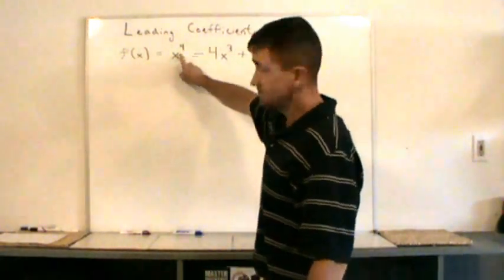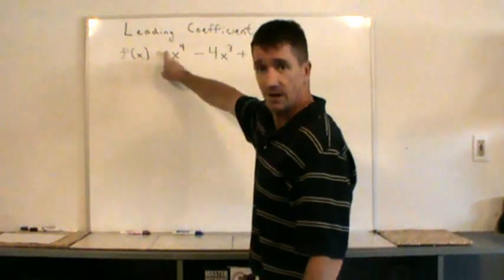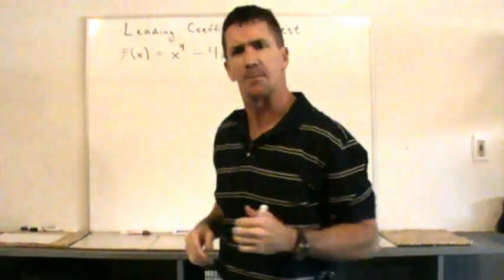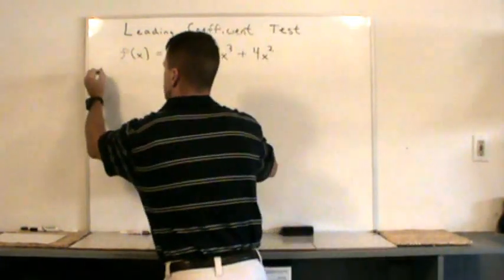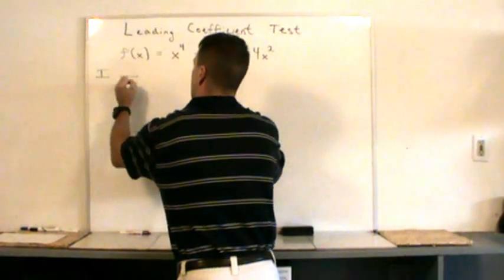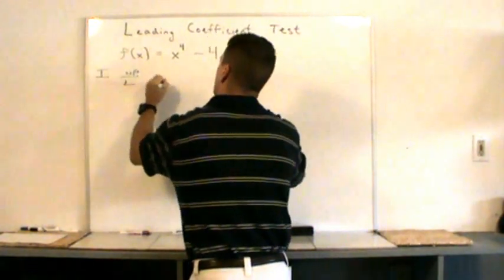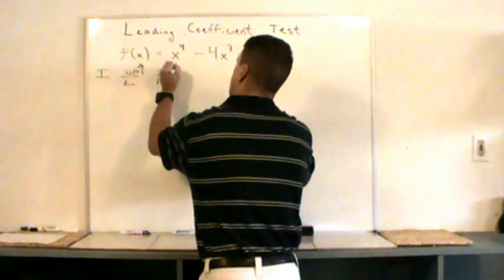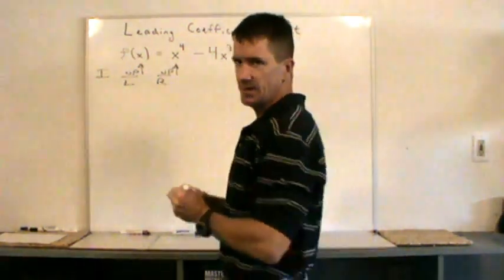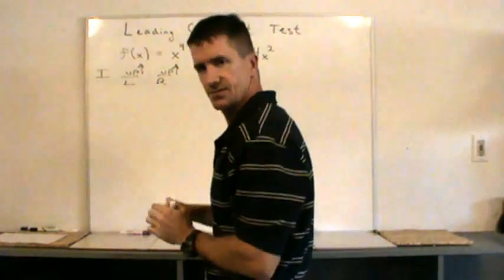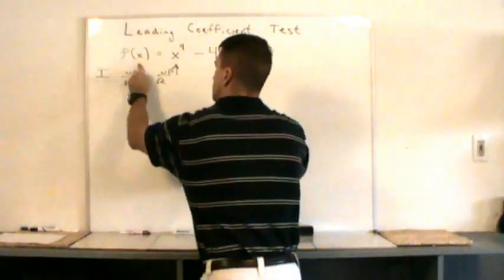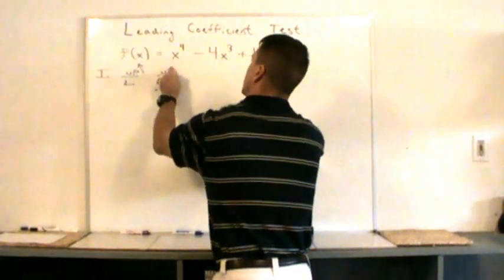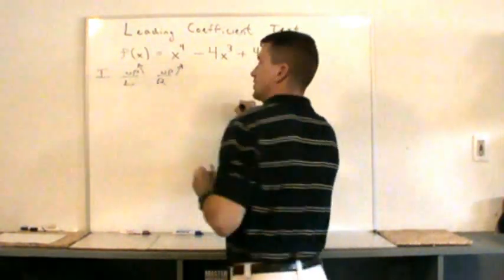Even power, and the coefficient is a positive one, so both arms will be up — the end behavior. I'm going to write that down so we don't forget. The left arm will be up and the right arm will also be up. This will be the end behavior of this function. What's going on in the middle?